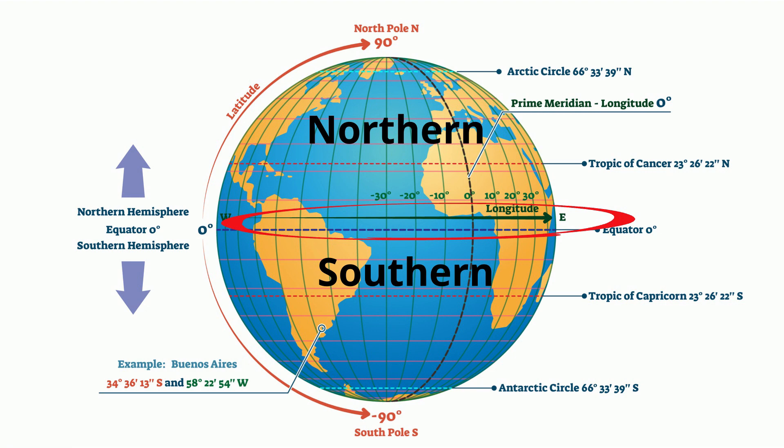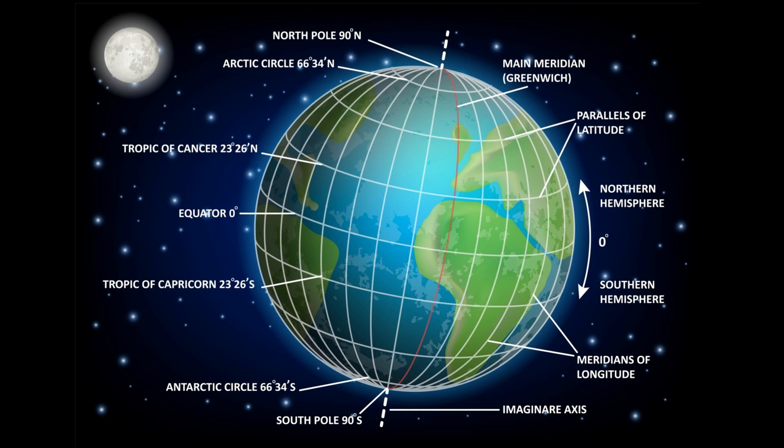The world can also be divided in half another way, separating east from west. The imaginary line that divides the world into equal east and west halves is called the prime meridian and passes north to south through Greenwich Observatory in London, England.